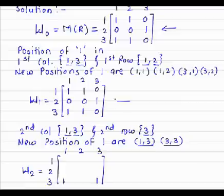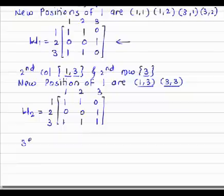The new positions are (1,3) and (3,3), and the remaining entries are taken from the previous matrix. So 1, 1, 0, 0, 0, 1, 1, 1, 0. Again, we do the same process for the third column.